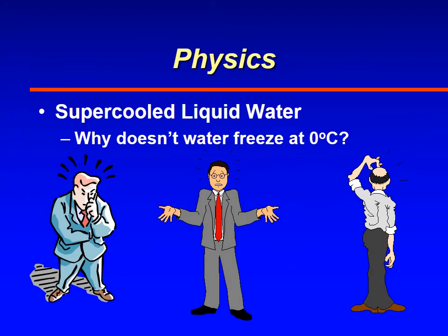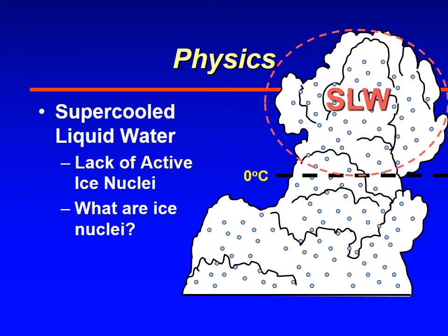You can have liquid water at temperatures colder than zero. You're probably familiar with refrigerators and how they produce ice. But liquid water can exist below zero because you need something to start the ice process. Getting back to the refrigerator analogy, you put water in an ice cube tray and the sides of the tray help initiate the ice process. In a cloud, there are no ice cube trays — the water is pure and not touching anything, except perhaps aerosols.